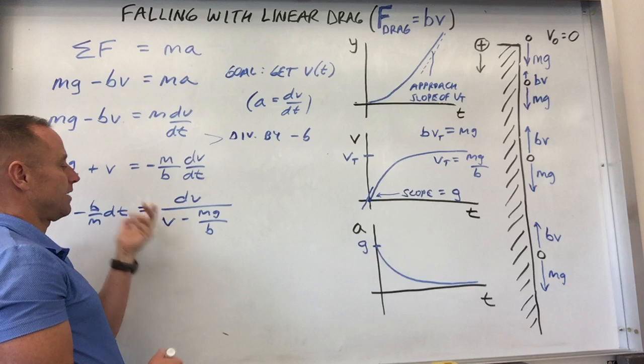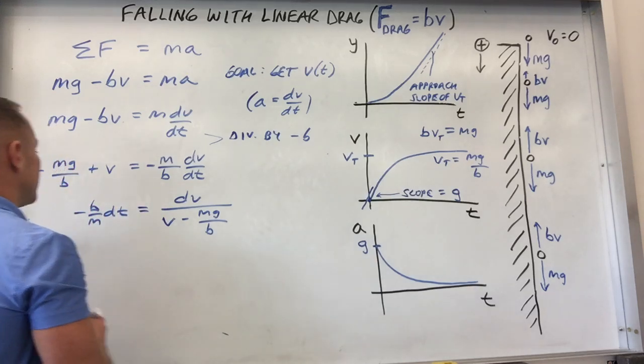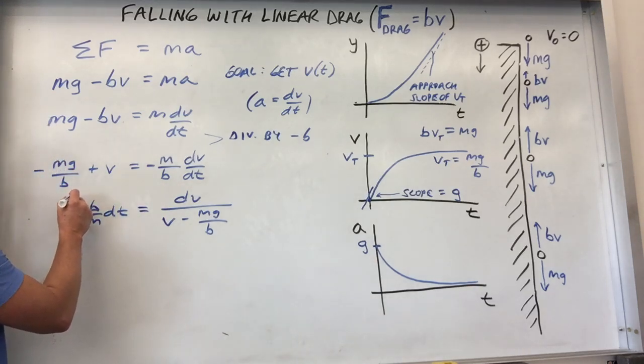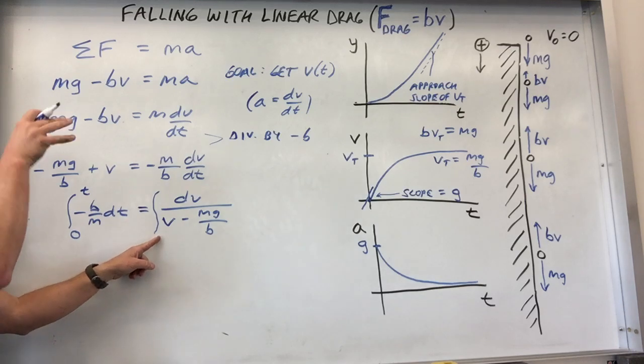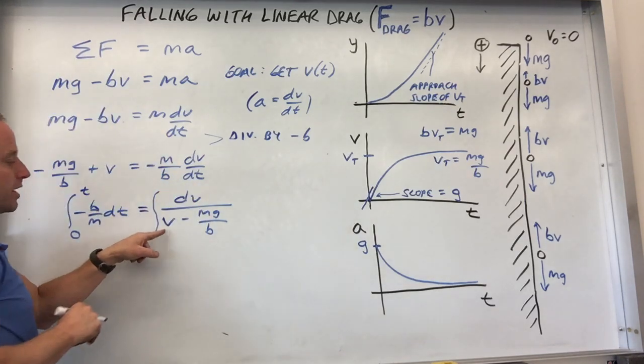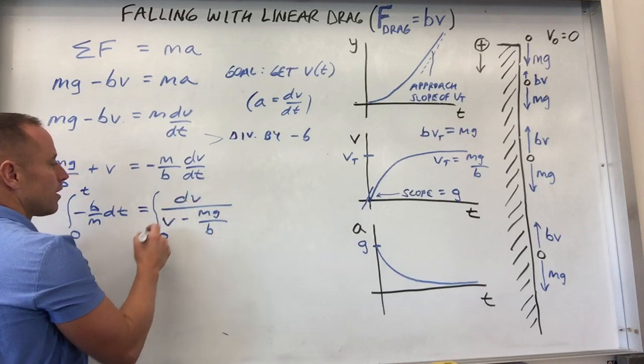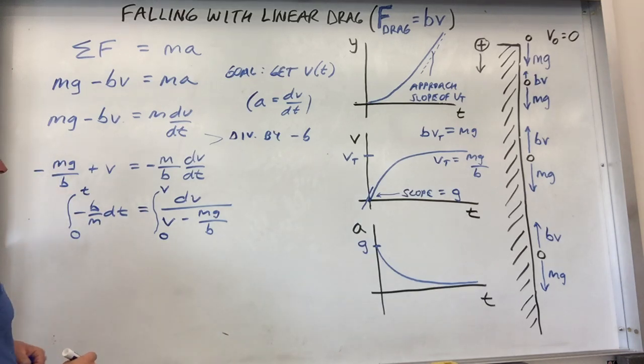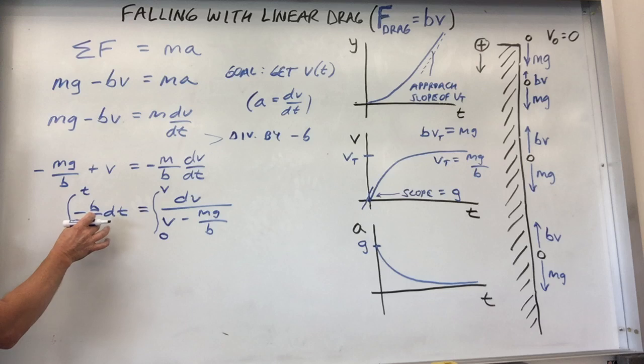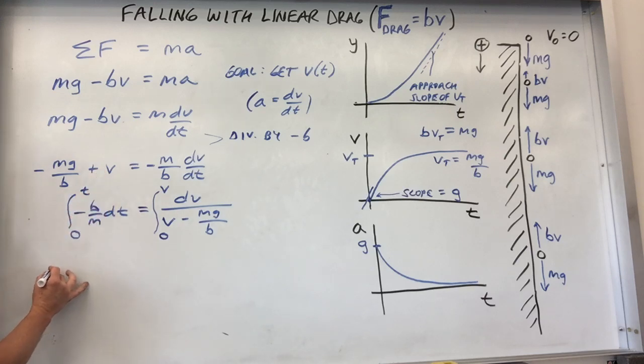So now what we need to do is a technique that's called separate and integrate. So what you want to do is get V's on one side and t's on the other so you can integrate this thing. Different ways to do it, again, matter of style. What I like to do, and I used to screw this up as an undergrad all the time, but what I like to do is just bring this whole thing under the dv and bring everything else over to the left. So in other words, let's just bring this entire mass on the left under the dv. So you'll get dv over, just bring this whole thing under. So you'll get v minus mg over b here.